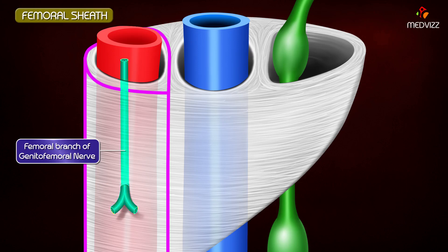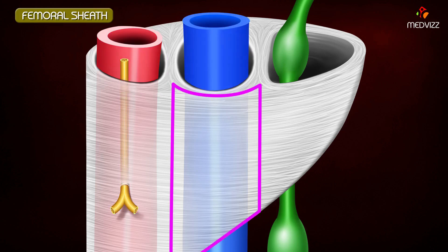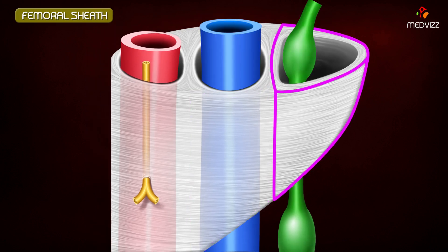Medial to the lateral compartment is the intermediate compartment, also called the venous compartment, which contains the femoral vein. The medial-most compartment of the femoral sheath is called the medial or lymphatic compartment, which is the smallest of all three.